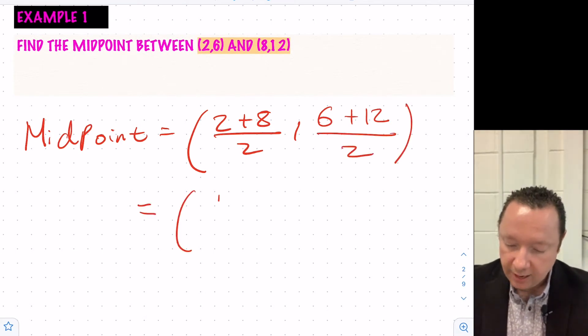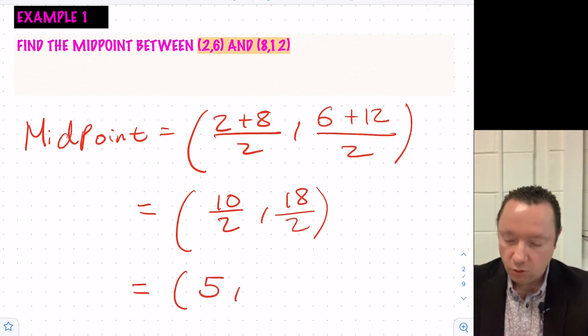Work out our sums, 10 over 2 and 18 over 2. So our final answer, 10 divided by 2 is 5, and 18 divided by 2 is 9. So 5, 9 is the midpoint.